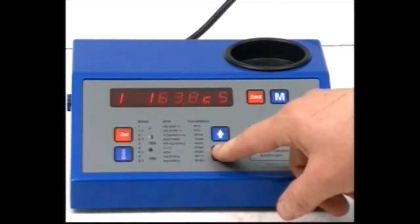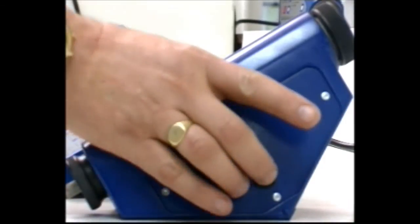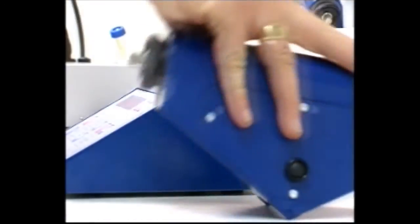For more accurate results, several readings can be taken over a period of 5 minutes. This is important if the oil is a lot hotter or colder than the viscometer. Simply press the power button and repeat the tilt procedure.